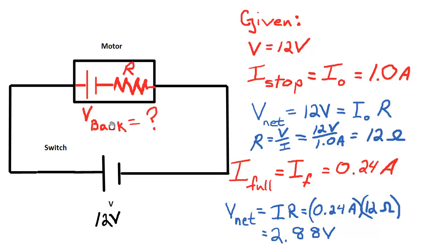We know our net voltage consists of two voltages added together. The original voltage we'll assume is positive as it's going with the current, and our back voltage we'll assume is negative. These two things we'll add together to create 2.88 volts.